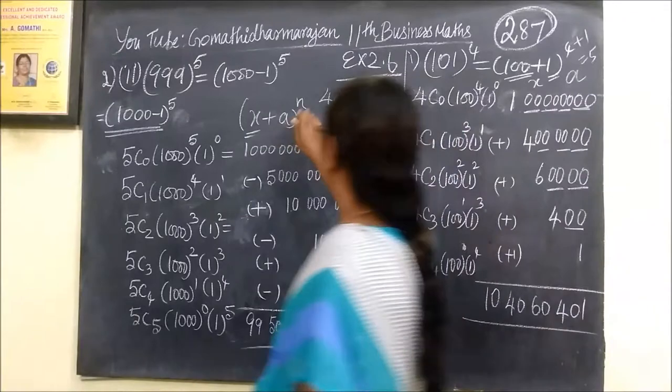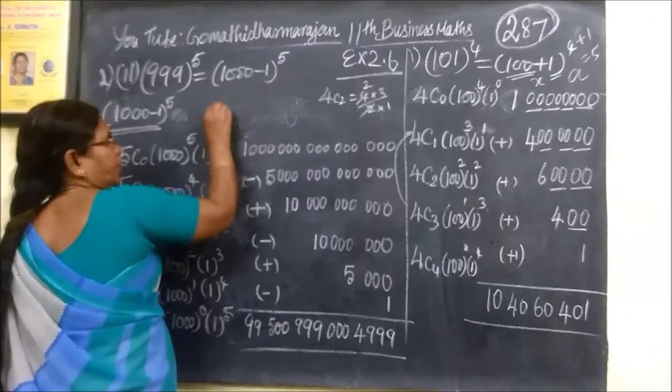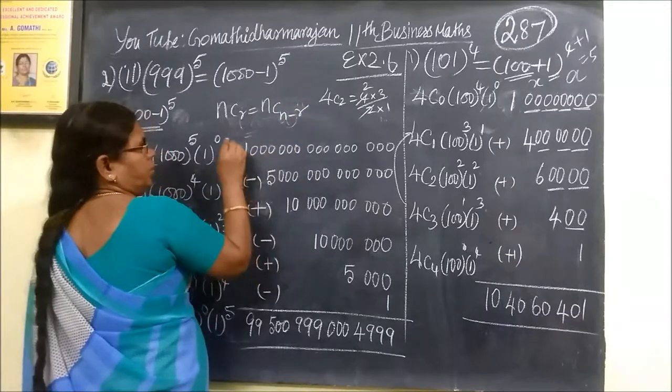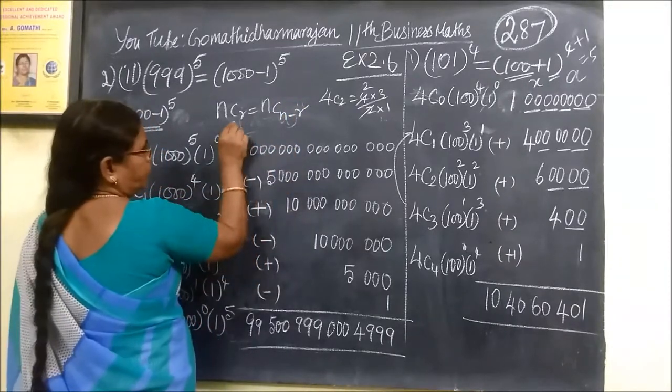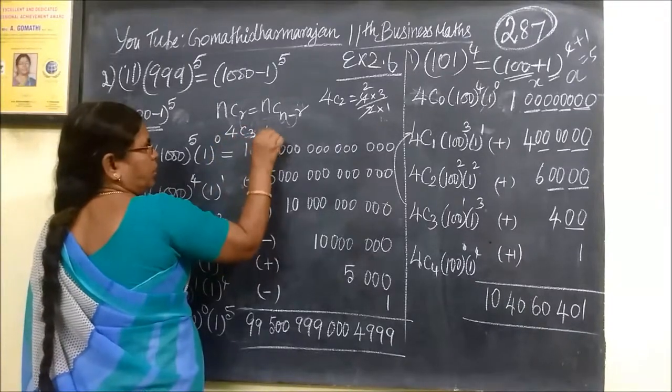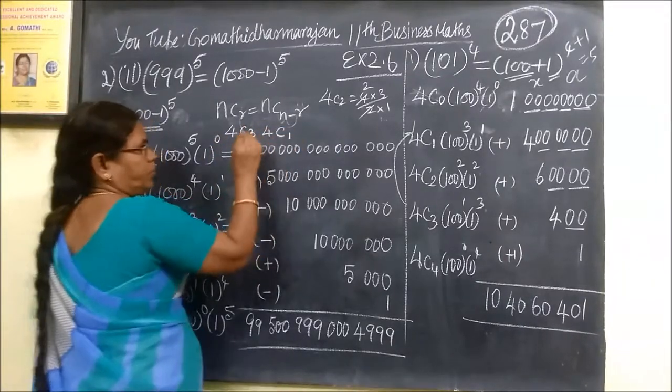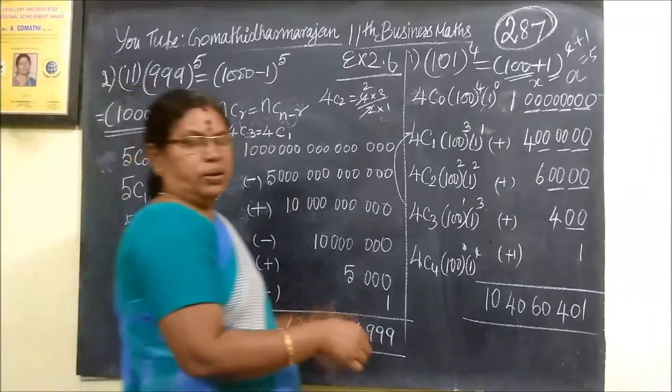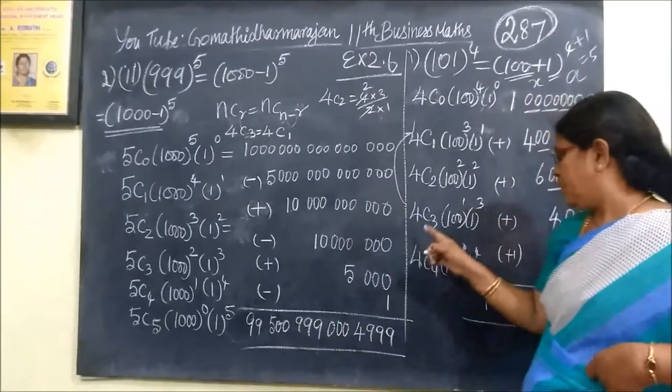4C3 is equal to 4C1. NCR is equal to NC(N-R). Then 4C3 equals 4C(4-3), so 4C3 equals 4C1.